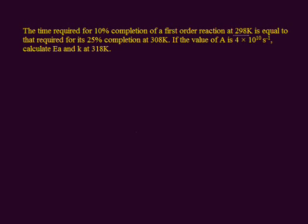The time required for 10 percent completion of a first order reaction at 298 K is equal to that required for its 25 percent completion at 308 K. At different temperatures there is a different rate of reaction. For 10 percent completion of the reaction, the remaining amount is 100 minus 10 equals 90. The temperature is 298 K, which we label as T1.